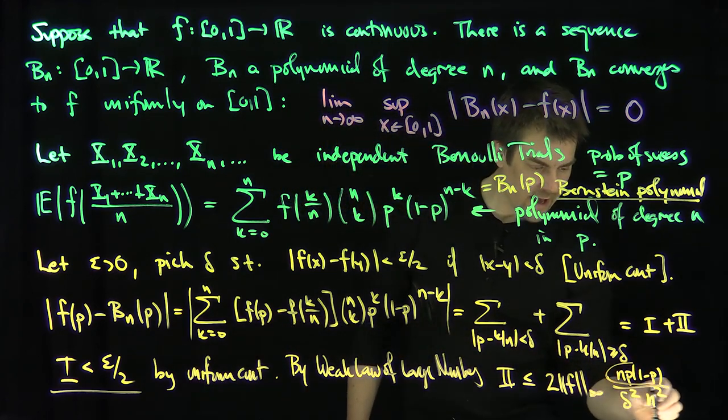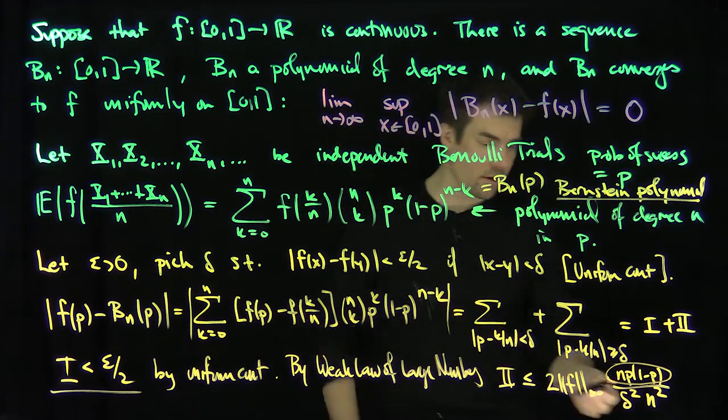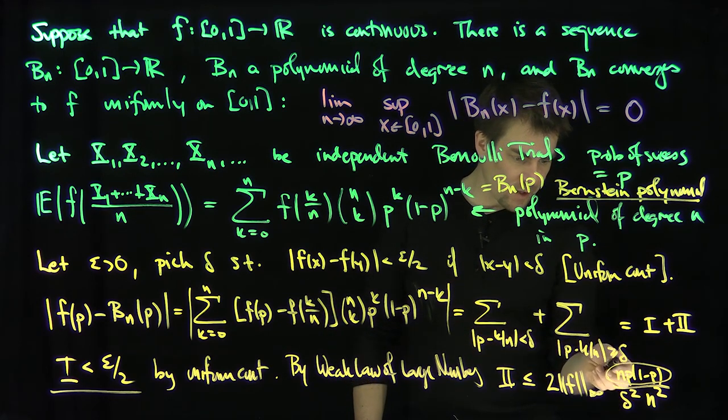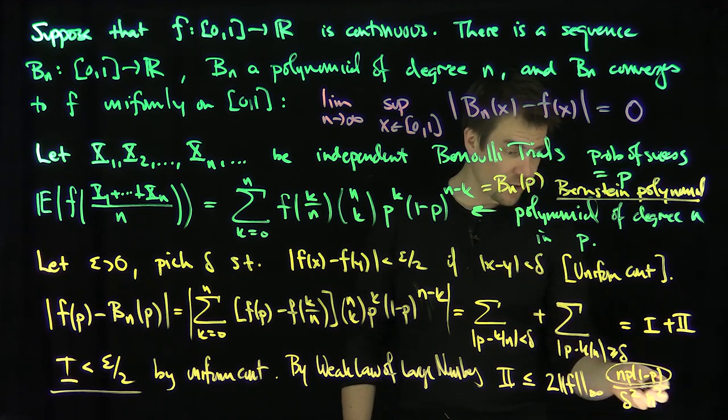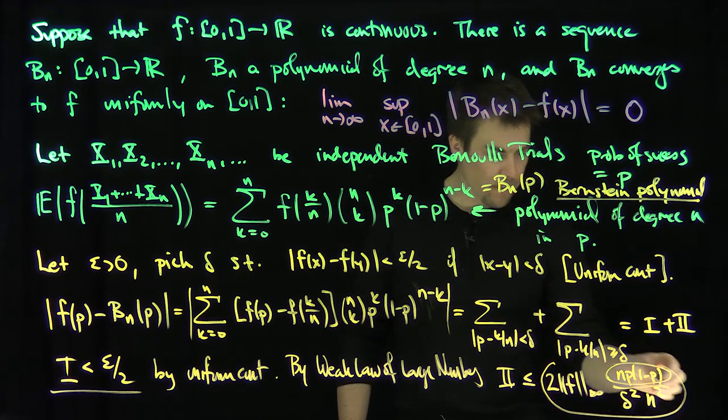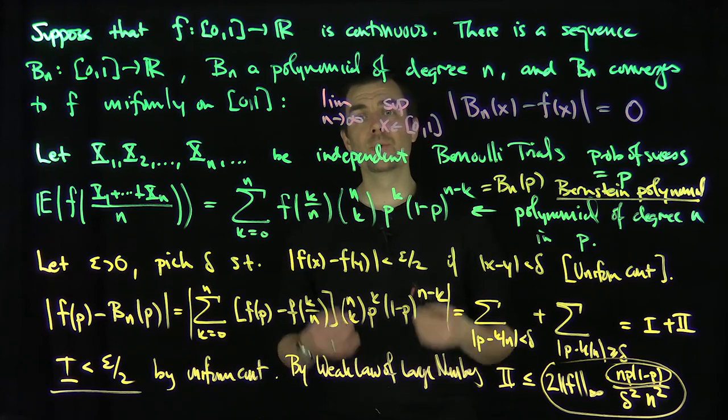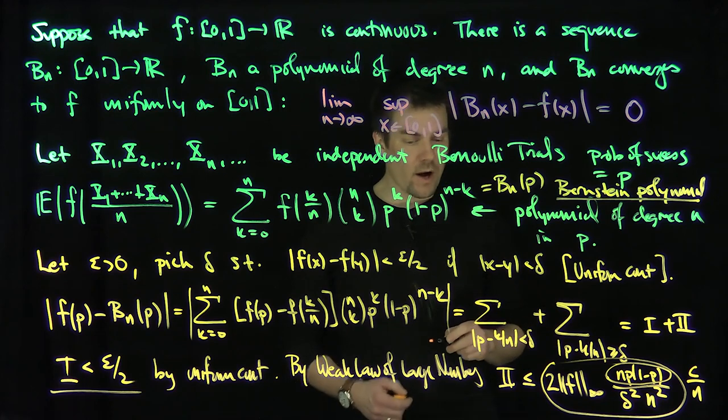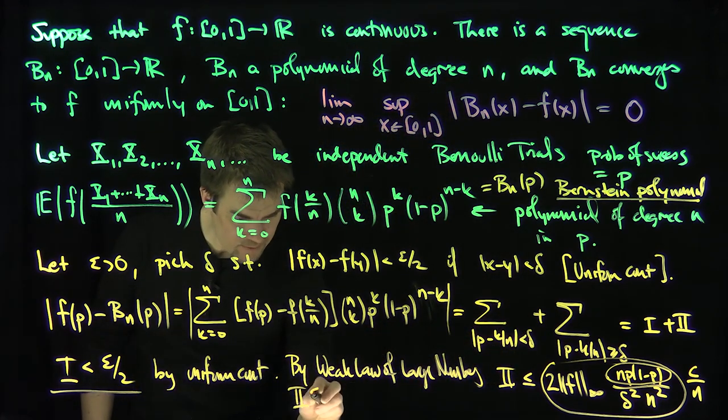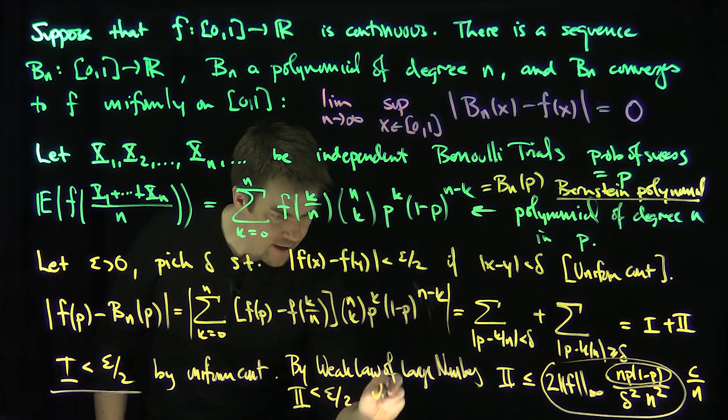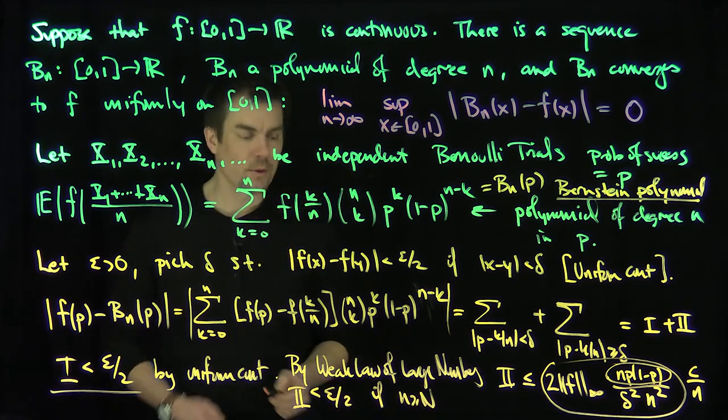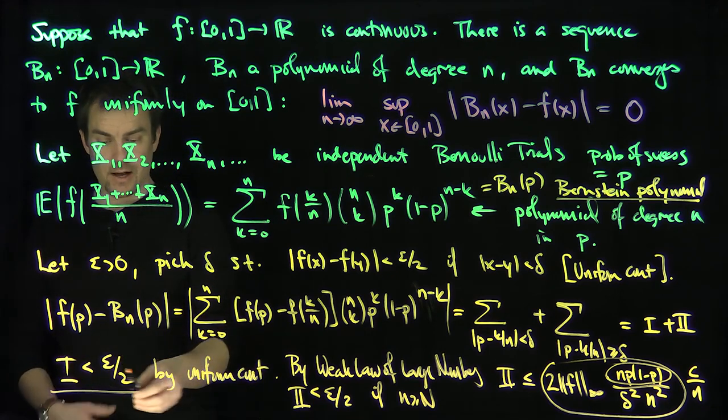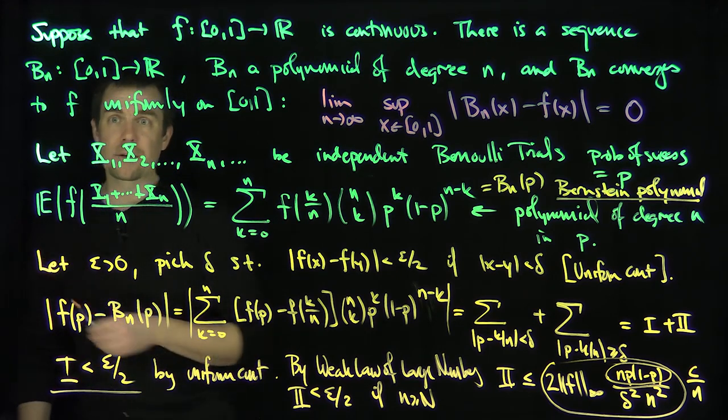That basically follows from the variance of these trials, and then delta squared, the parameter you're bigger than, and then n squared. So this thing looks like it's comparable to a constant times 1/n. So II can be made less than epsilon/2 if n is large enough, if n is bigger than or equal to N capital.